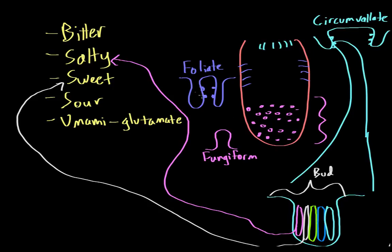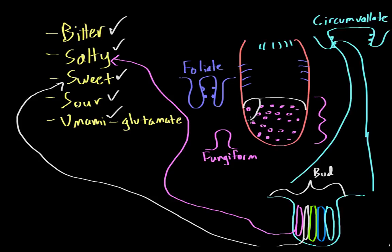Every single taste bud contains all of the different taste cells, so every taste bud is able to detect bitter, salty, sweet, sour, and umami compounds. These taste buds are found all around the tongue, mostly in the anterior part. We're able to taste all five tastes everywhere in the tongue — it's not as if bitter can only be tasted in one region, and salty only in another. That is not the case.